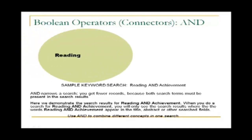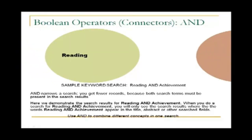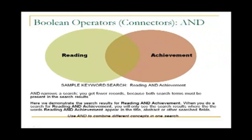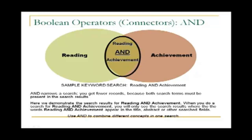Here's a sample search using the Boolean operator or connector AND. We use the term reading AND achievement. AND narrows the search — you get fewer records because both search terms must be present in the search results. When you do a search for reading AND achievement, you will only see results where the words reading AND achievement appear in the title, abstract, or other searched fields. Use AND to combine different concepts in one search.